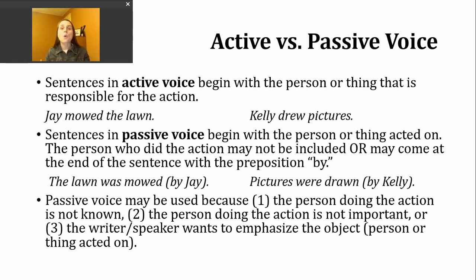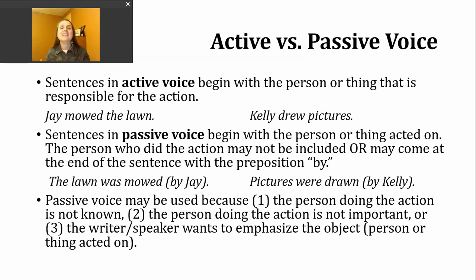If the person or thing responsible for the action is included, you're going to see that person or thing come at the end of the sentence right after the preposition by. So I took my first two examples — Jay mowed the lawn and Kelly drew pictures — and made them passive. I could say the lawn was mowed, or the lawn was mowed by Jay. Either one is a fine passive sentence. Pictures were drawn, or pictures were drawn by Kelly — either one would work for passive voice.